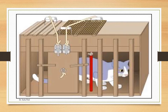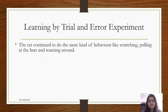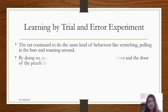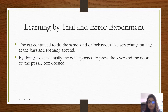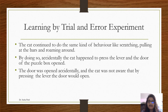Here in this picture, we can see the cat trying to come out of the box and get the food which is kept outside. The cat continued the same behavior — scratching, pulling at the bars, and roaming around. By doing so, not on purpose but accidentally, the cat happened to press the lever and the door of the puzzle box opened. The door was opened accidentally and the cat was not aware that by pressing the lever, the door would open.